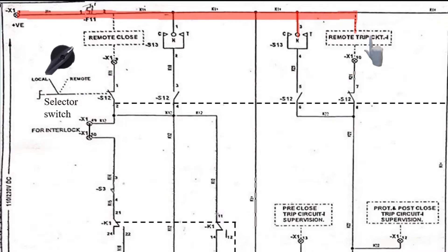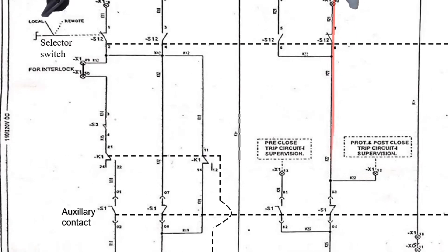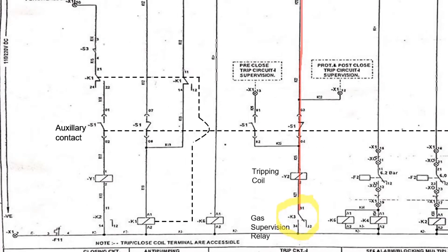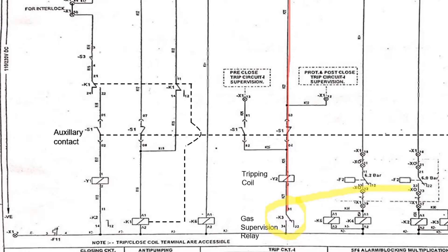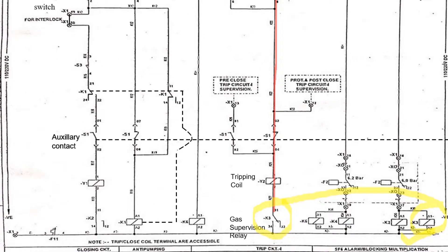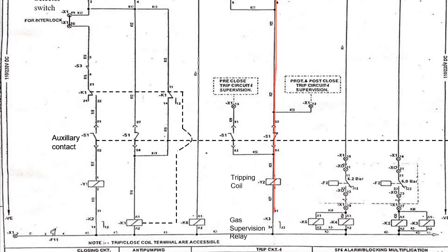Now when the operator present in the control room performs the trip operation, the current will flow like this, passing through the tripping coil and will stop at the gas supervision relay. Here K3 relay will close its contact only when the SF6 gas pressure in the circuit breaker is more than 6 bar. When it is more than 6 bar, the relay gets energized and changes its contact from NO to closed position. Then the current, by flowing through K3 and fuse, completes the tripping circuit.